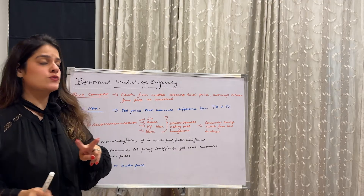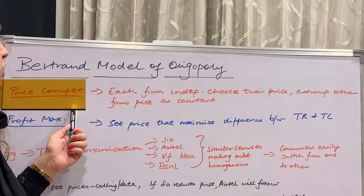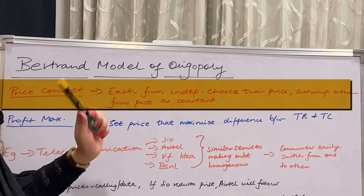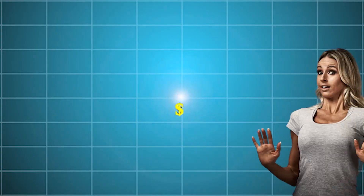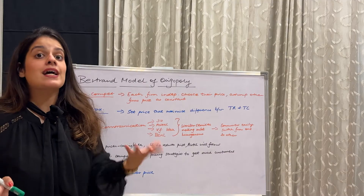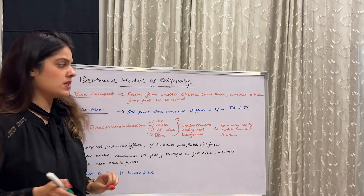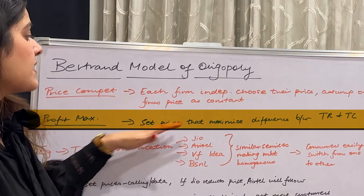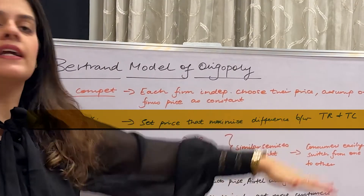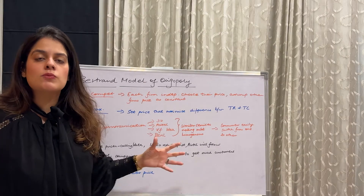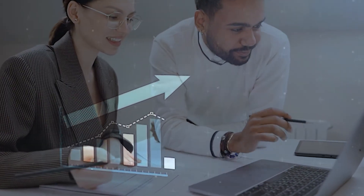Now, coming to the crux of the model: there are two strategies which firms can follow. Number one is the price competition strategy, where each firm independently chooses their price and assumes the other firm's price remains constant. Number two is profit maximization — they set the price that maximizes the difference between total revenue (TR) and total cost (TC). If that difference is maximum, the company earns maximum profit.